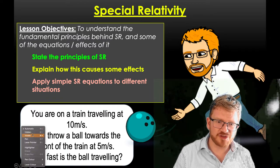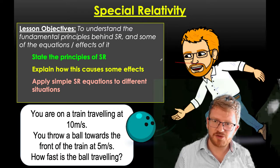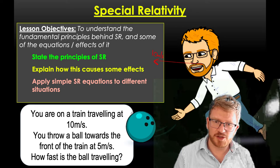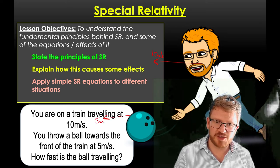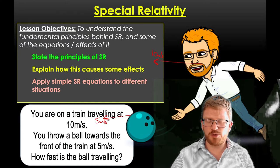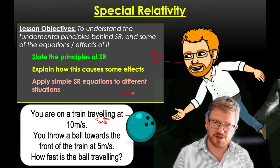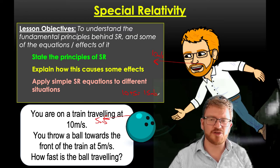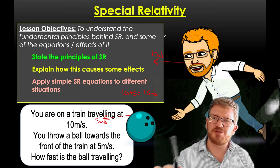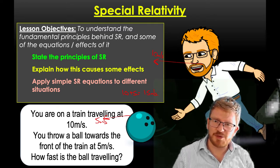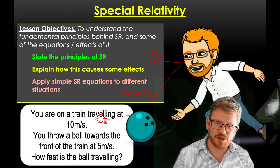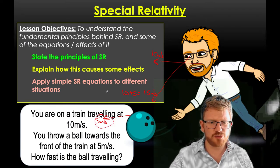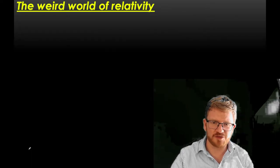If I'm travelling at 10 metres per second and the ball is travelling at 5 metres per second, a lot of you would be tempted to say it must be 10 plus 5, so 15 metres per second. But the fundamental problem of special relativity is that when I look at the ball, I see it travelling away from me at 5 metres per second. So what is the true speed of the ball? That's what we're going to cover today.